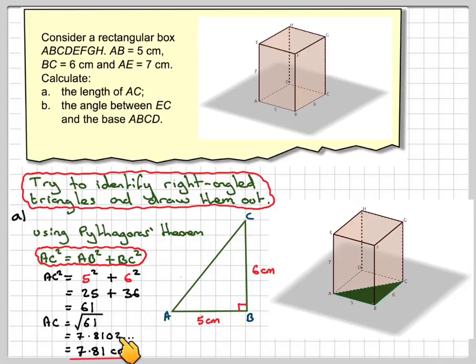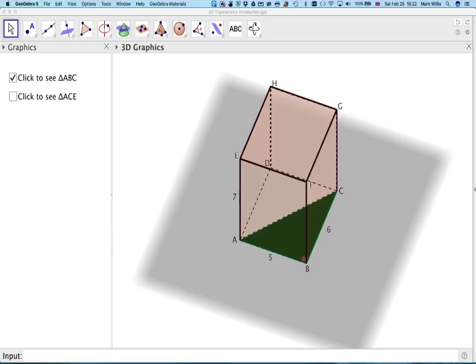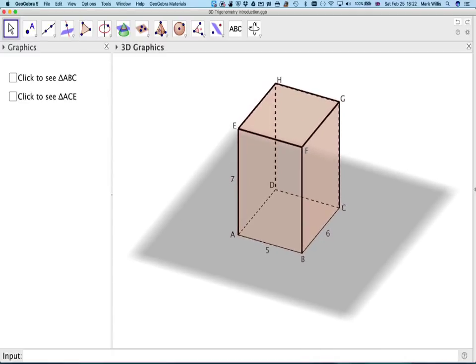It's important, though, you do write out 4 calculator values. Right, now we need to find the angle between EC and ABCD. So, we want the angle between EC and the base ABCD. So, if we go back to our GeoGebra applet, stop the video now and see if you can identify where the right-angled triangle should be.